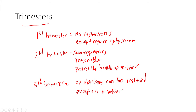Now obviously, a state like California has decided they can allow abortions even in the third trimester, and that's up to the state. The state can be more permissive than this structure if they want to be, but they don't have to be.